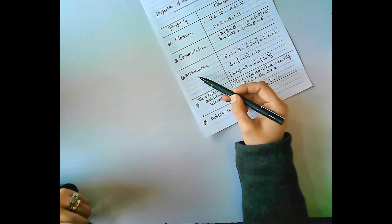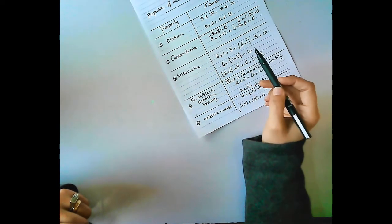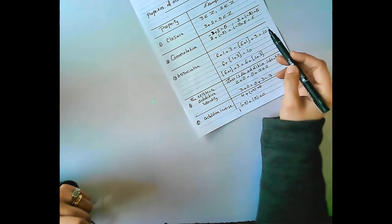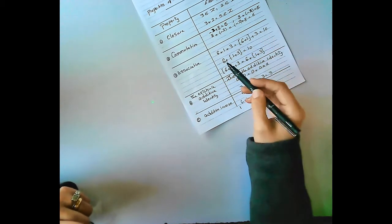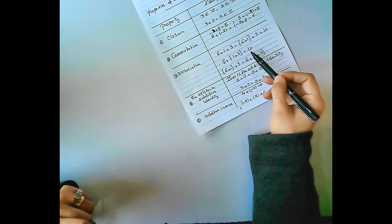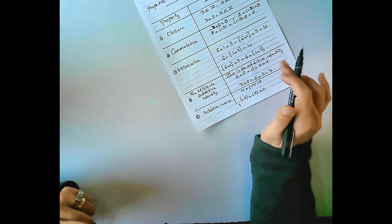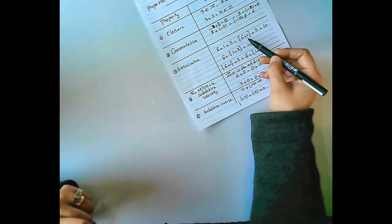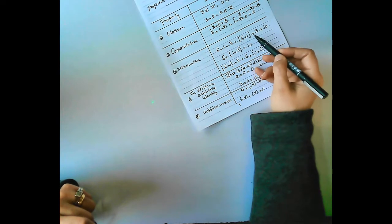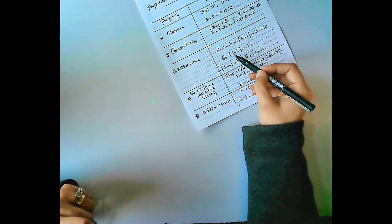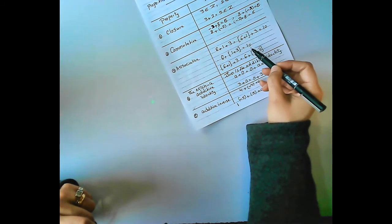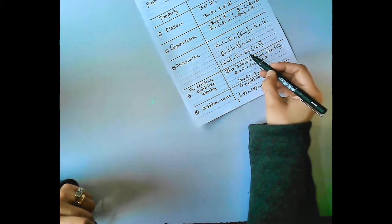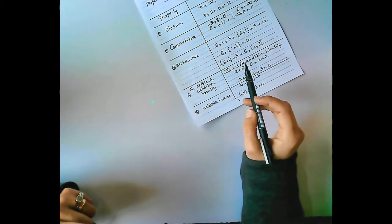Number 3: Associative property. For example, 6 plus 1 plus 3: we can write (6 plus 1) plus 3 equals 6 plus (1 plus 3). Both equal 10. So (6 plus 1) plus 3 equals 6 plus (1 plus 3). That is the associative property.